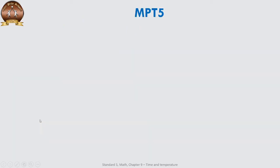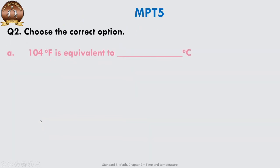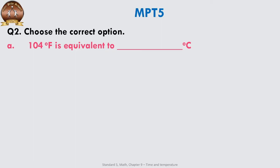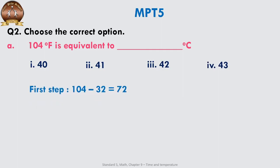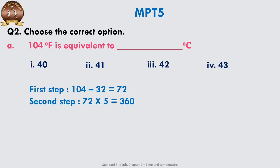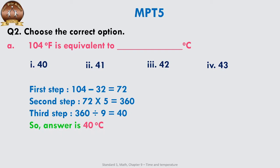Let us do some questions. Choose the correct option: 104°F is equal to how many degrees Celsius — 40, 41, 42, or 43? Step 1: subtract 32 from 104°F — you get 72. Step 2: multiply 72 by 5 — you get 360. Step 3: divide 360 by 9 — you get 40. The answer is 40°C.